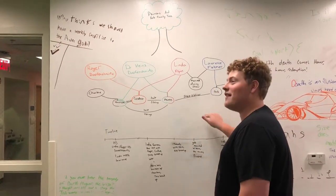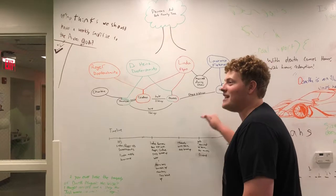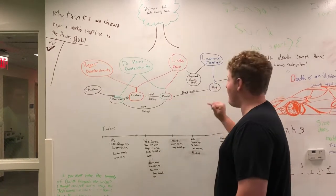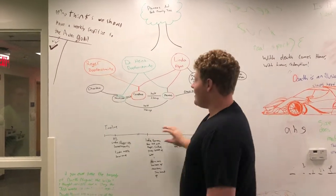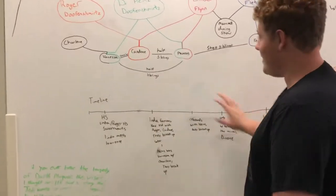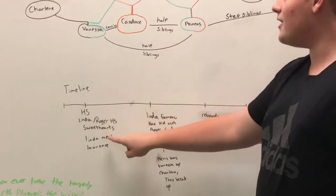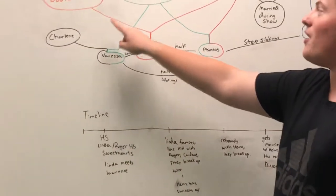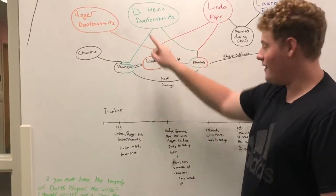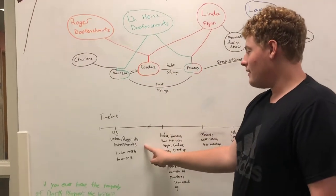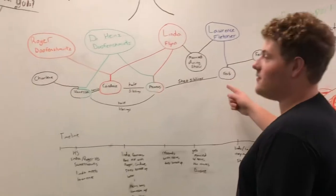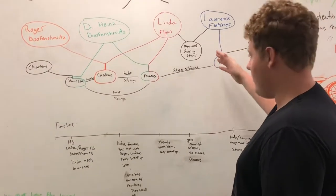Everyone knows there's some speculation on who Phineas and Candace's fathers are, right? I looked through all the episodes. I watched every single episode 15 times each, and I memorized and wrote down everything that I found. Now listen. This is the timeline. This is how everything happens. In high school, Linda and Roger Doofenshmirtz, the brother to Hines, date. They are high school sweethearts. Linda also happens to meet Lawrence, Ferb's father, as he's a foreign exchange student.